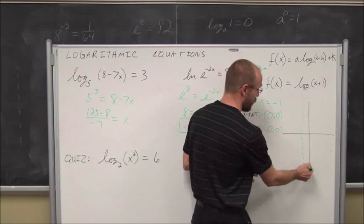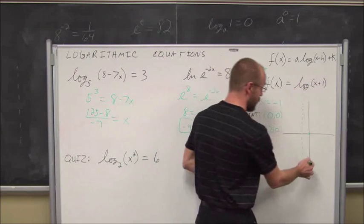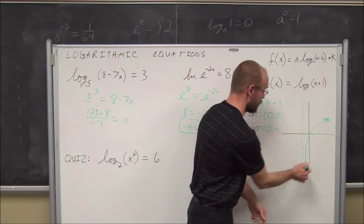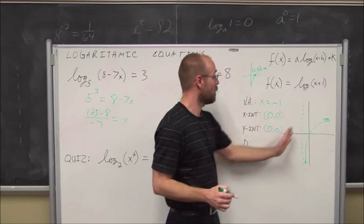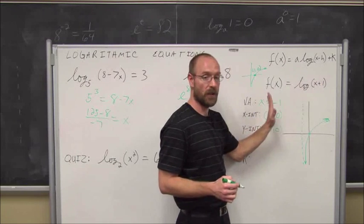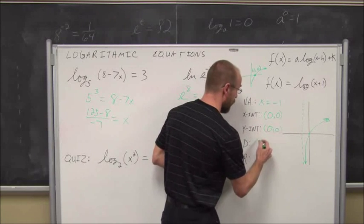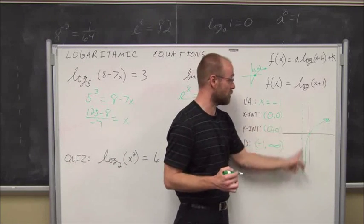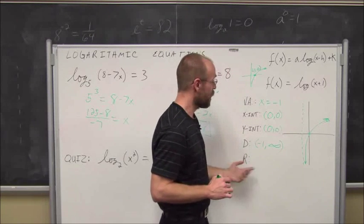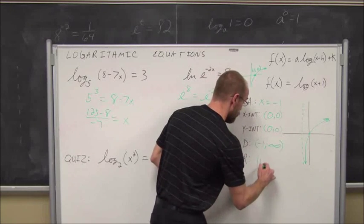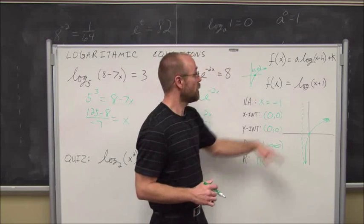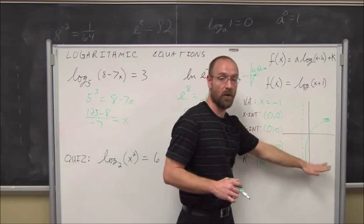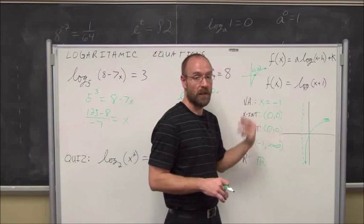The domain — because of this horizontal shift, everything shifted to the left — is from negative 1 to infinity, not including negative 1 since it's a vertical asymptote. Graphs never cross their vertical asymptotes. The range hasn't changed — it's still all real numbers from negative infinity to positive infinity. If there were a value being added or subtracted outside the log, that would just shift the graph up or down, just like we explored when we talked about transforms in the previous section.